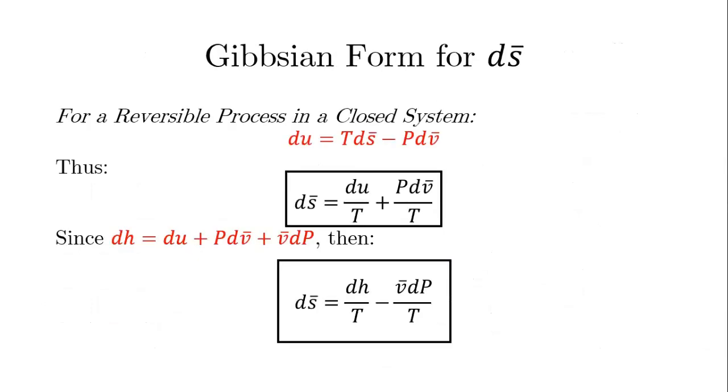Going back to non-statistical mechanics, if we look at the change in entropy for a reversible process in a closed system, the first law of thermodynamics for a closed system with only expansion work would be DU equals TDS minus PDV. TDS stands for the heat because we're saying it's reversible, and PDV stands for the work since we're saying it's only expansion work. I can solve for DS and get the first boxed equation.